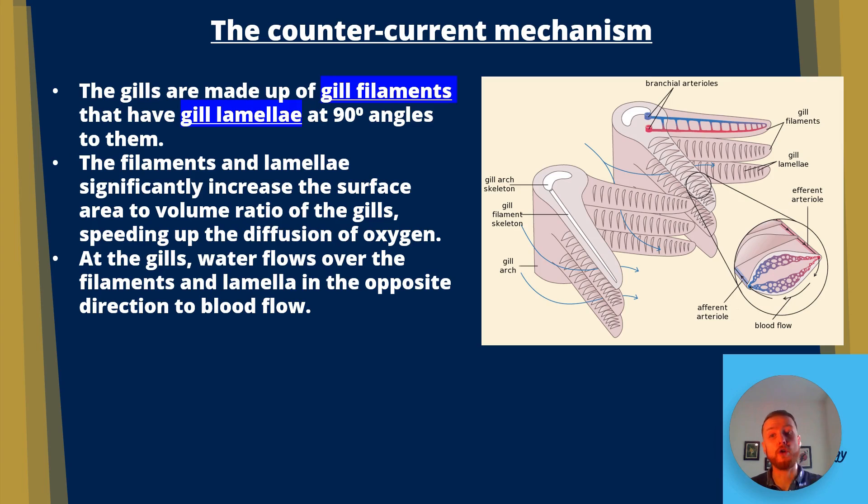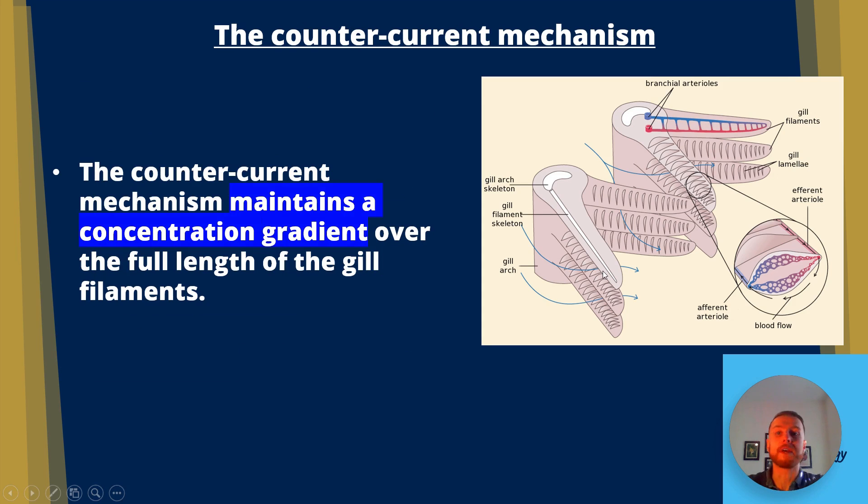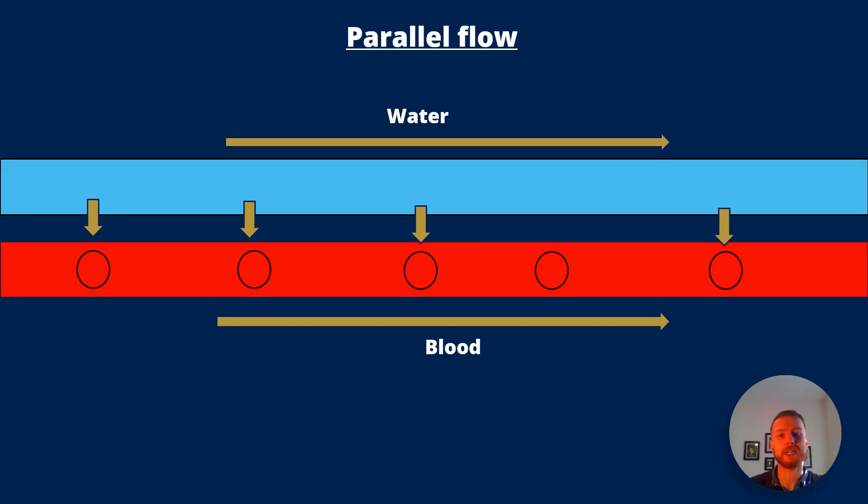At the gills water flows over the filaments and lamellae in opposite directions. That's why it's called countercurrent because the blood flows in the opposite direction of the water. It flows counter to the current. The countercurrent mechanism maintains a concentration gradient over the full length of the gill filaments. So let's look at it in more detail.